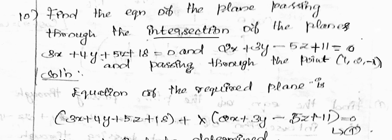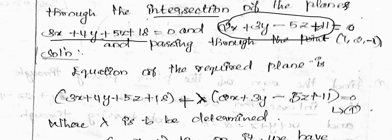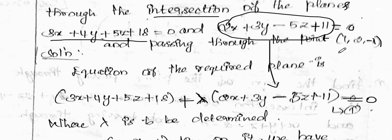So what is the method? The equation of the required plane is: the first plane equation equals 0, plus lambda times the second equation equals 0. This is the plane equation. What we need is lambda, where lambda is to be determined.